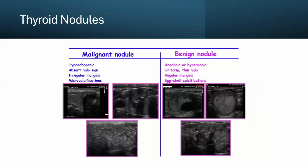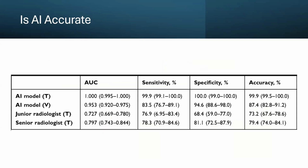Another effective application is thyroid nodules. It can be very hard to tell a malignant one from a benign one, but it's really interesting how you can use so many images to train an AI model to do this for you. Here again is a chart showing the accuracy of these AI models. The bottom three lines are junior radiologists, senior radiologists, and the AI model — and in general, the AI model was able to do just as well as a senior radiologist, if not better.